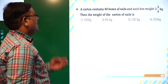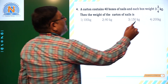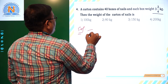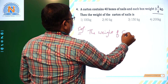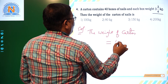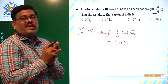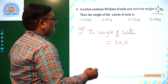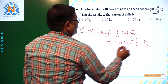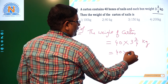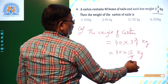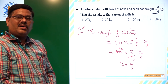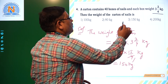Let us see the last question. A carton contains 40 boxes of knives, each box weighs 3 3/4 kg. What is the weight of the carton of knives? The weight of the carton equals 40 multiplied by each box weight — that is 40 into 3 3/4 kg. Converting to improper fraction: 3 3/4 = 15/4 kg. So 40 × 15/4 = 10 × 15 = 150 kg. The carton's weight is 150 kg — the third option is the right answer.